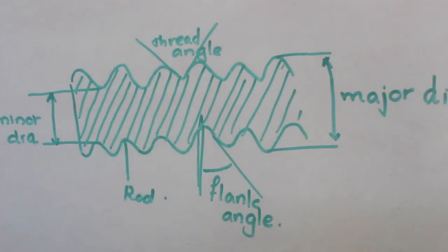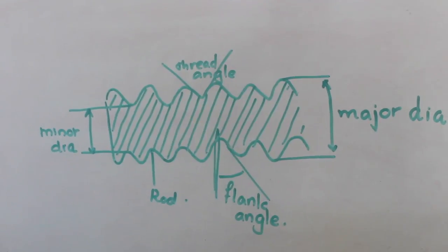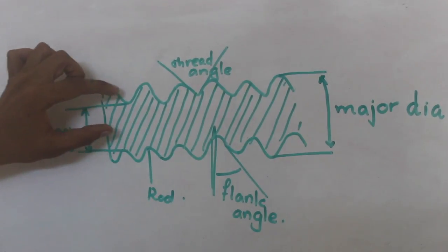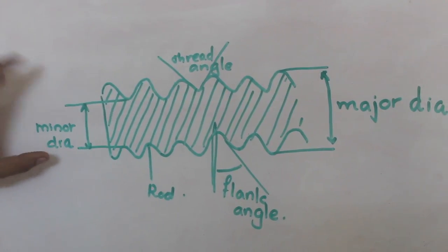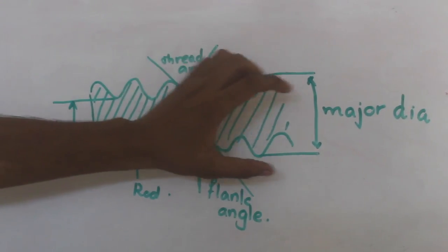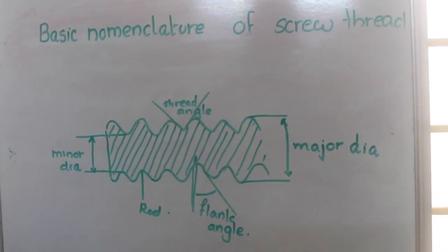And the distance between these two loops can be called as minor diameter, and the distance between these two elevations can be called as major diameter.